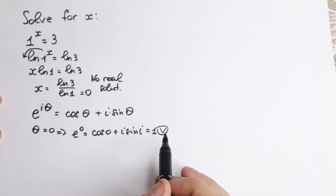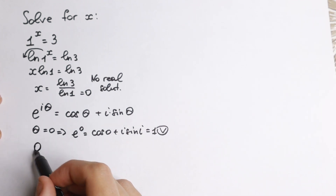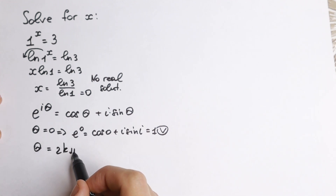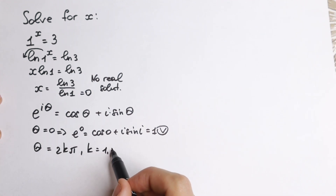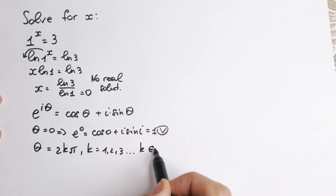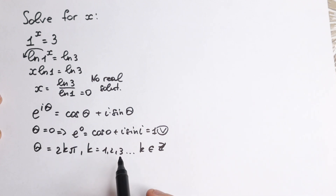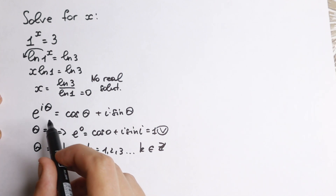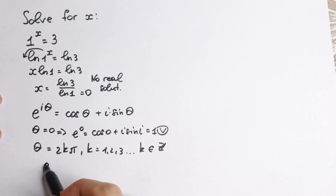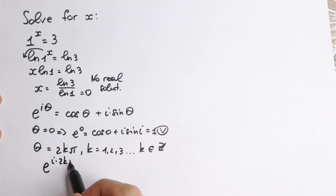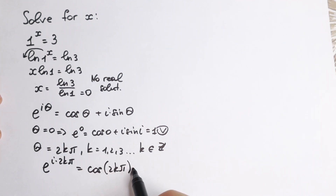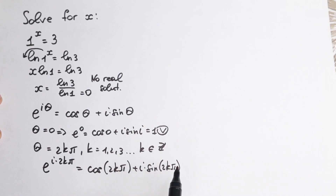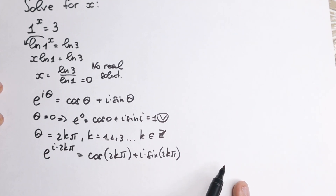But I want to show you a really good substitution right here. If theta equals 2k pi, where k equals 1, 2, 3 — so k is an integer, a whole number — let's go with this substitution. When we apply it, our equation looks like this: e to the power i times 2k pi equal to cosine 2k pi plus i times sine 2k pi. Nothing hard — we just have this substitution.